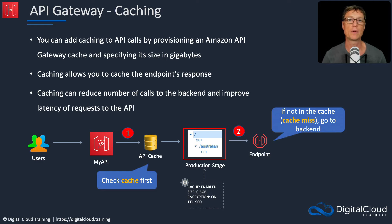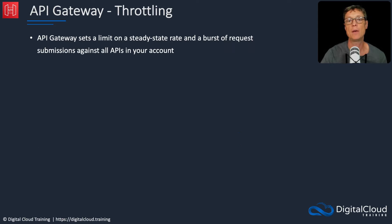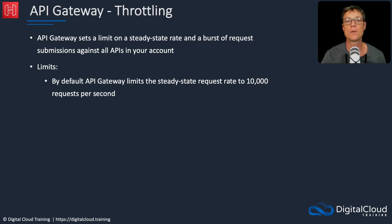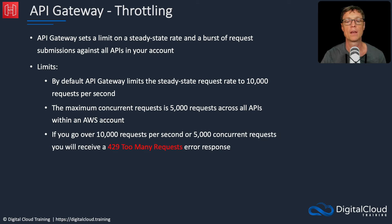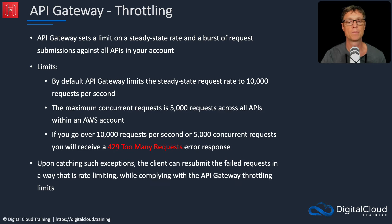You can also throttle APIs by setting a limit on the steady-state rate and the burst of request submissions. There is a limit at the account level, and you can add limits at the API level using a stage. By default, the steady-state request rate is limited to 10,000 requests per second, and the maximum concurrent requests is 5,000 across all your APIs in your account. If you exceed those limits, you get a 429 Too Many Requests error response. You'll want to build something into your application so that it knows how to resubmit requests without exceeding the throttling limits.